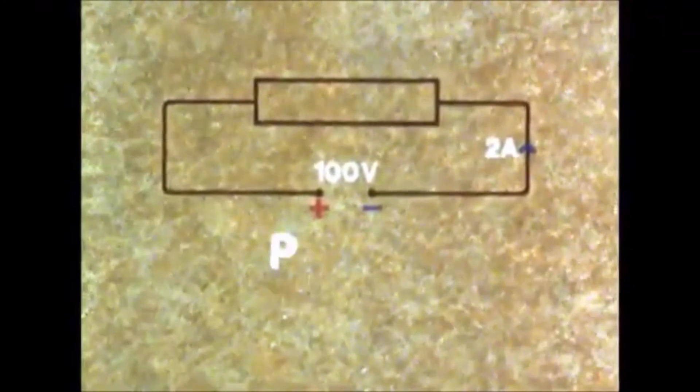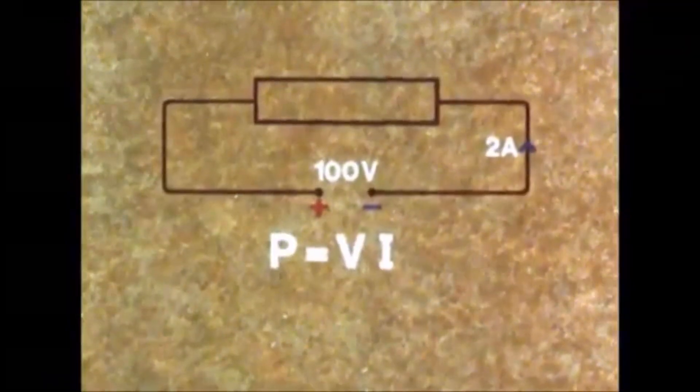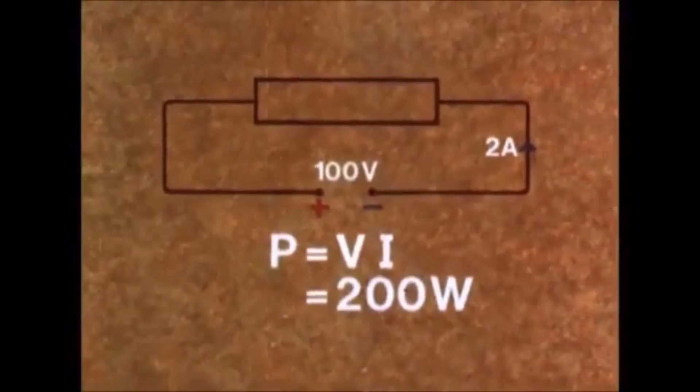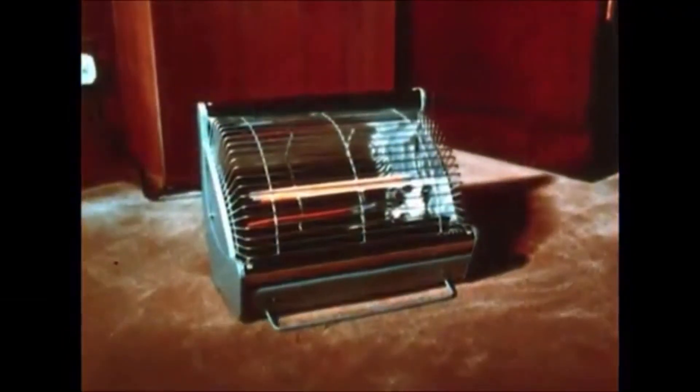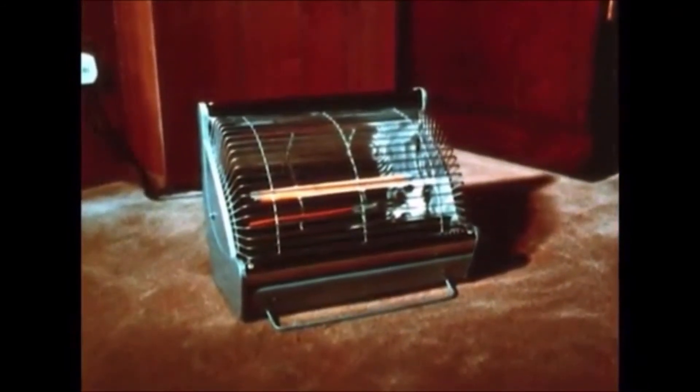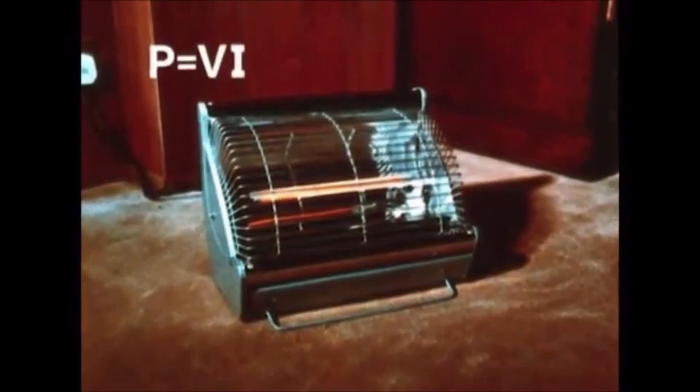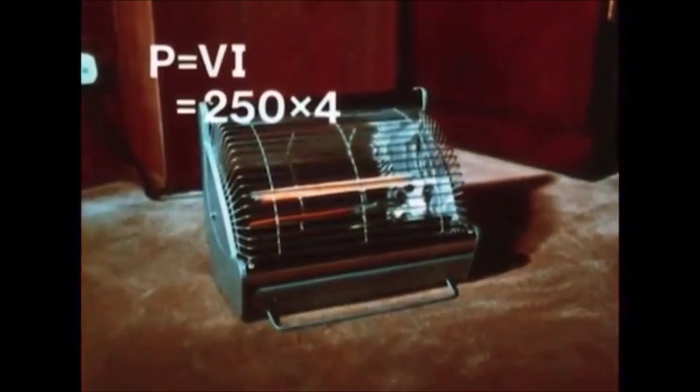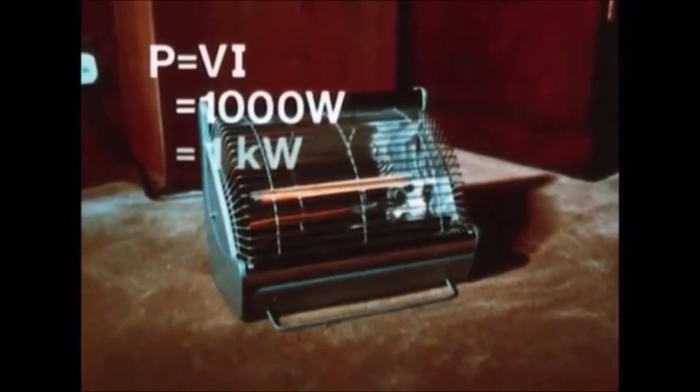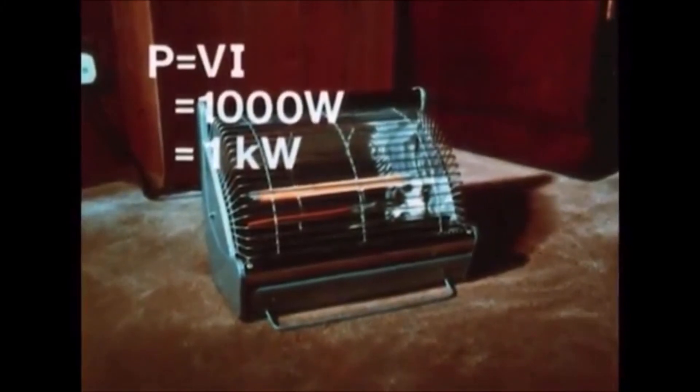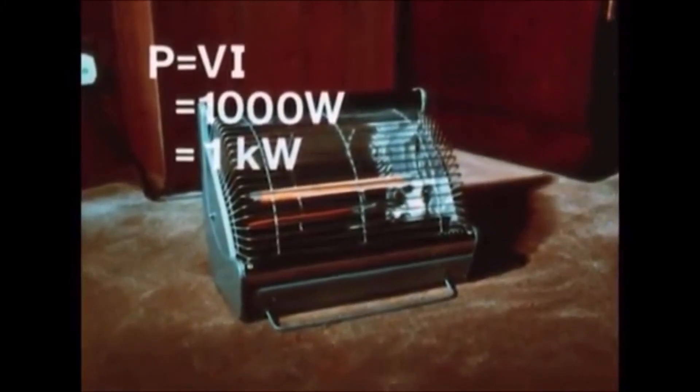Or again, this electric heater is connected to a voltage supply of 250 volts and is passing a current of 4 amps. The power absorbed by the heater is 250 times 4, that is a thousand watts, one kilowatt. It's a one kilowatt heater.